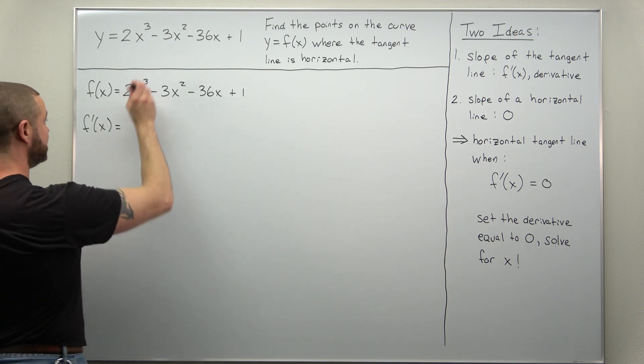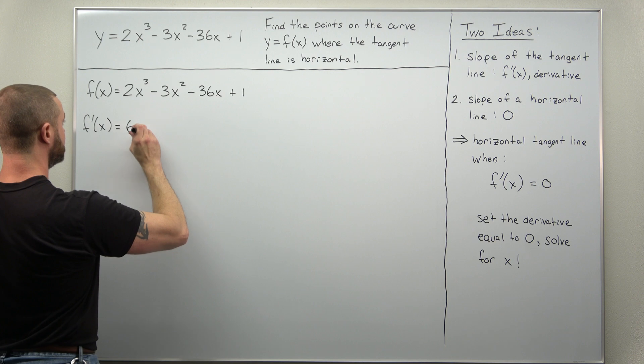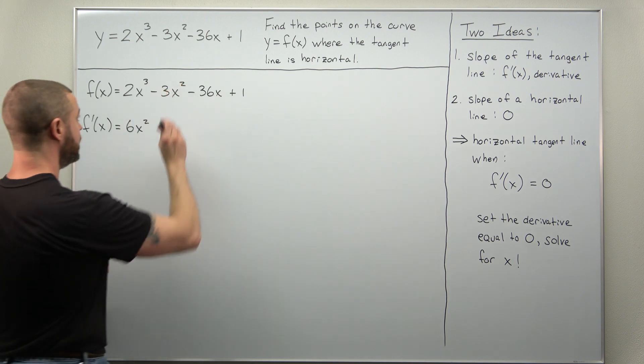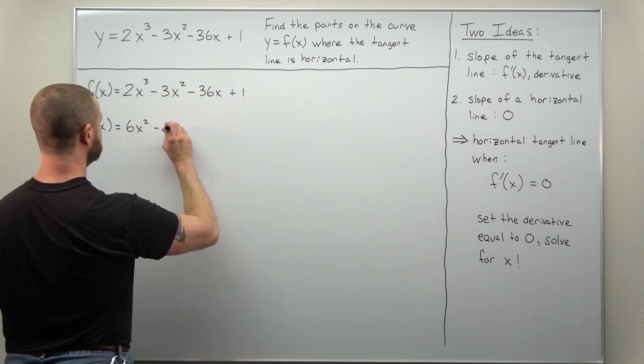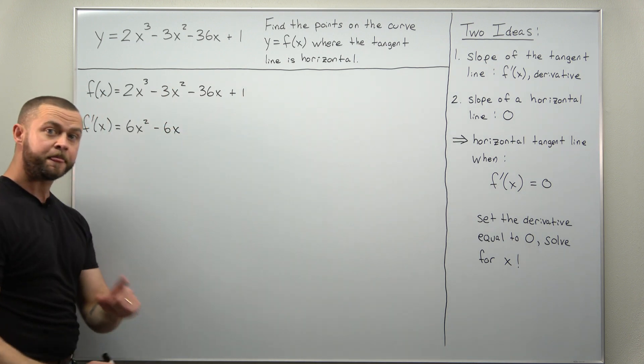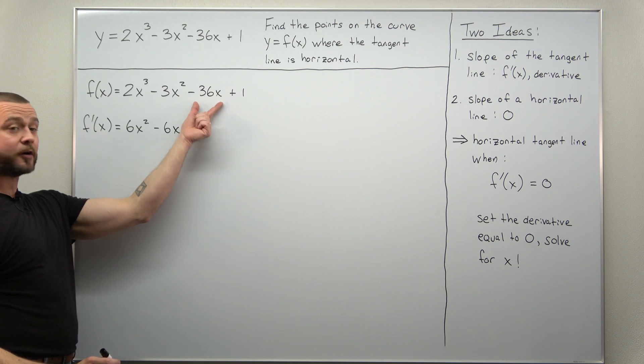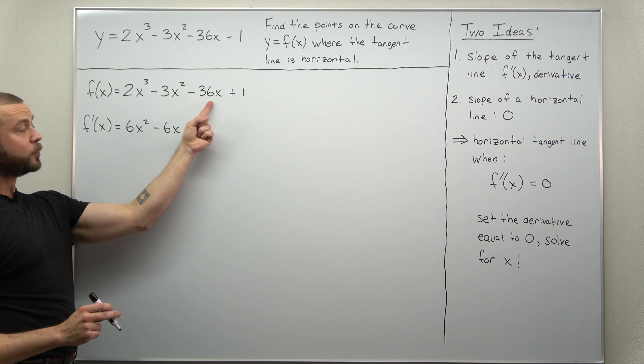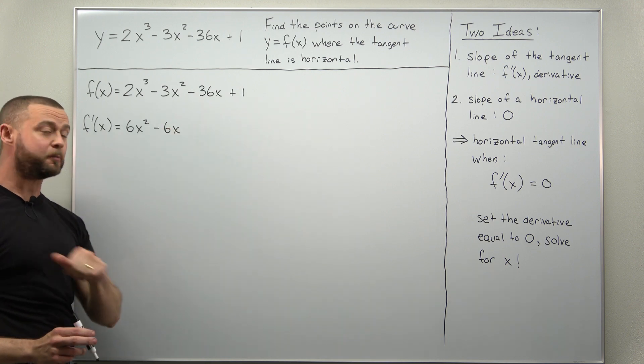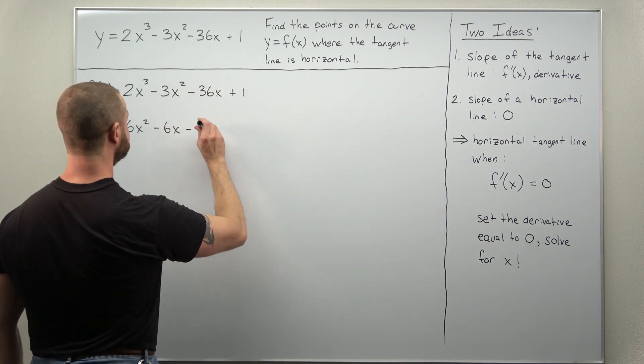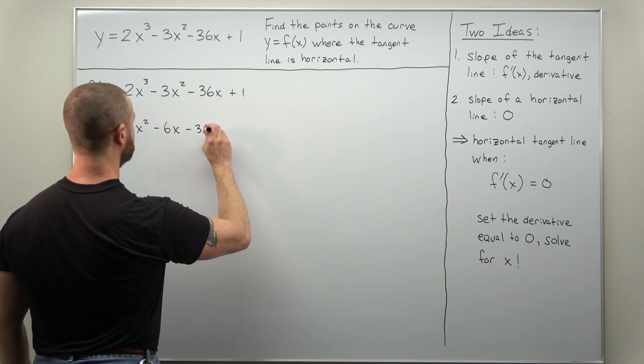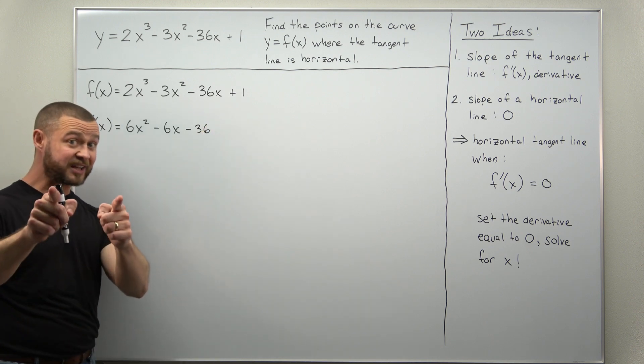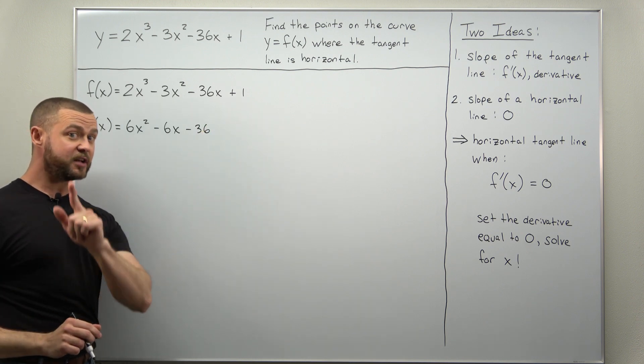All right, we're going to bring the power of three down to get 6x². Next term, bring the power of two down. We'll get minus 6x in the derivative. Differentiate the next term. The derivative of x, that's one. So here, think of 36 as a constant we're going to have minus 36 times one. We'll just write that as minus 36. And then your last term one, that's a constant, that differentiates to zero.